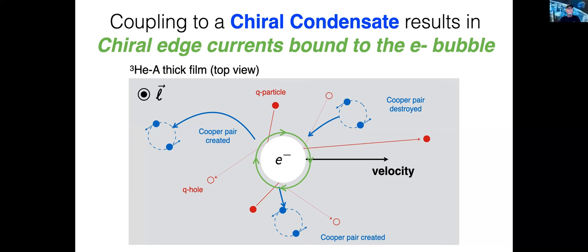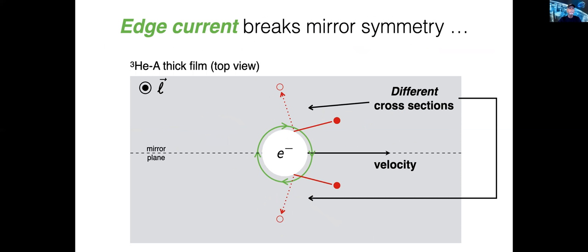Now, if the condensate is chiral, multiple branch conversion scattering leads to chiral edge states bound below the bulk excitation gap. In the occupied negative energy sub-gap states, there are unidirectional currents and chiral edge currents bound to the surface of the electron bubble, as indicated here by the green current arrows. In particular, the chiral bubble becomes left-handed in a right-handed chiral vacuum. The electron bubble acquires angular momentum inherited from the condensate.